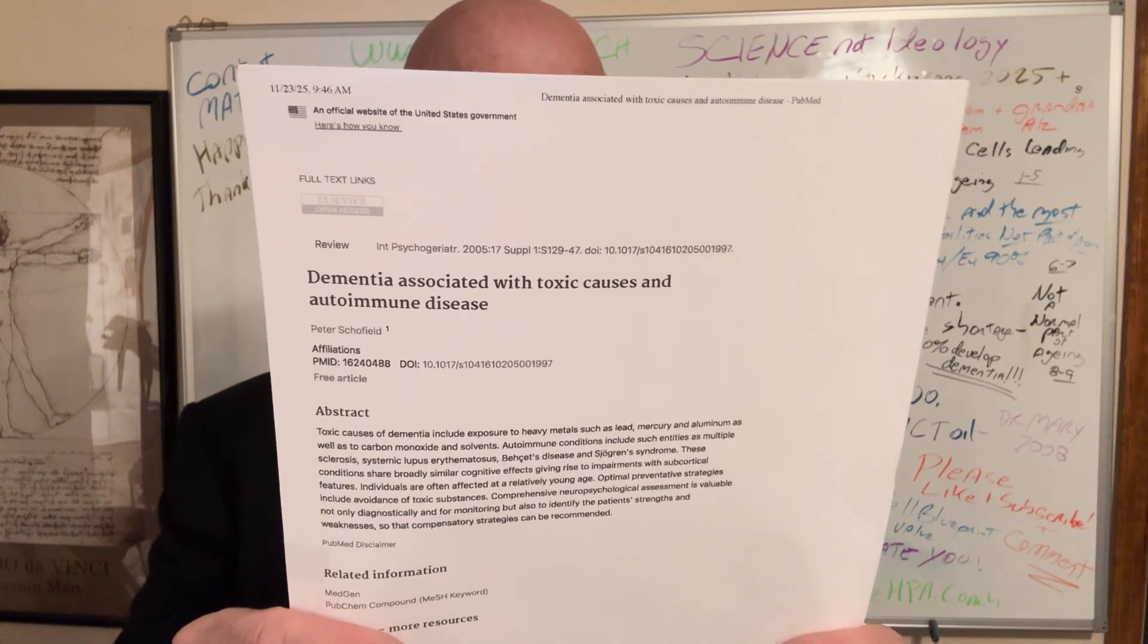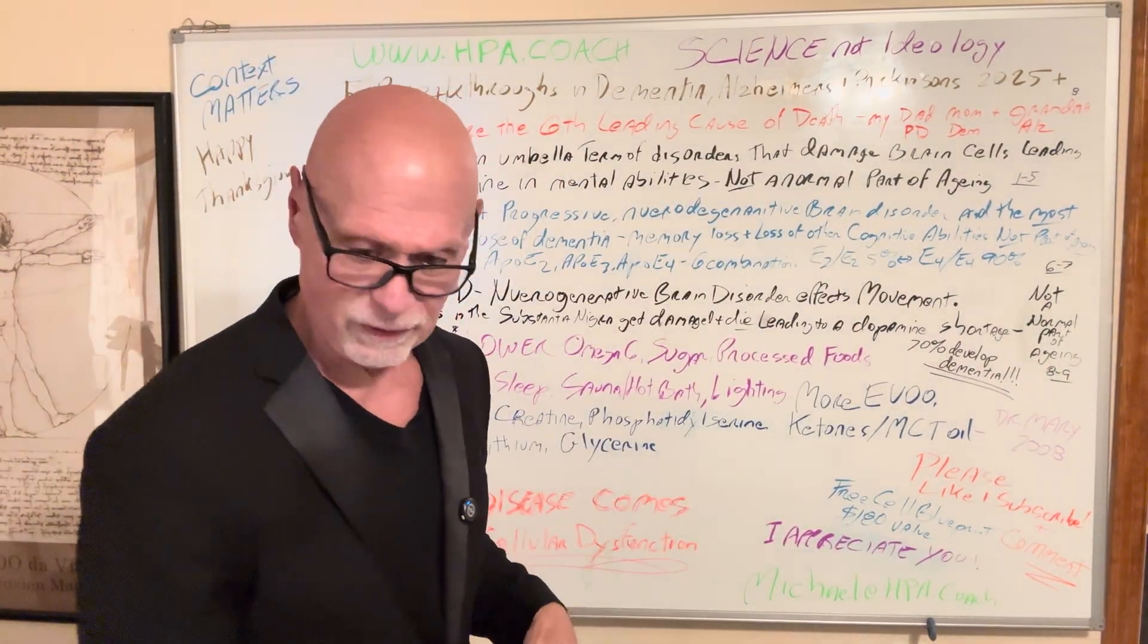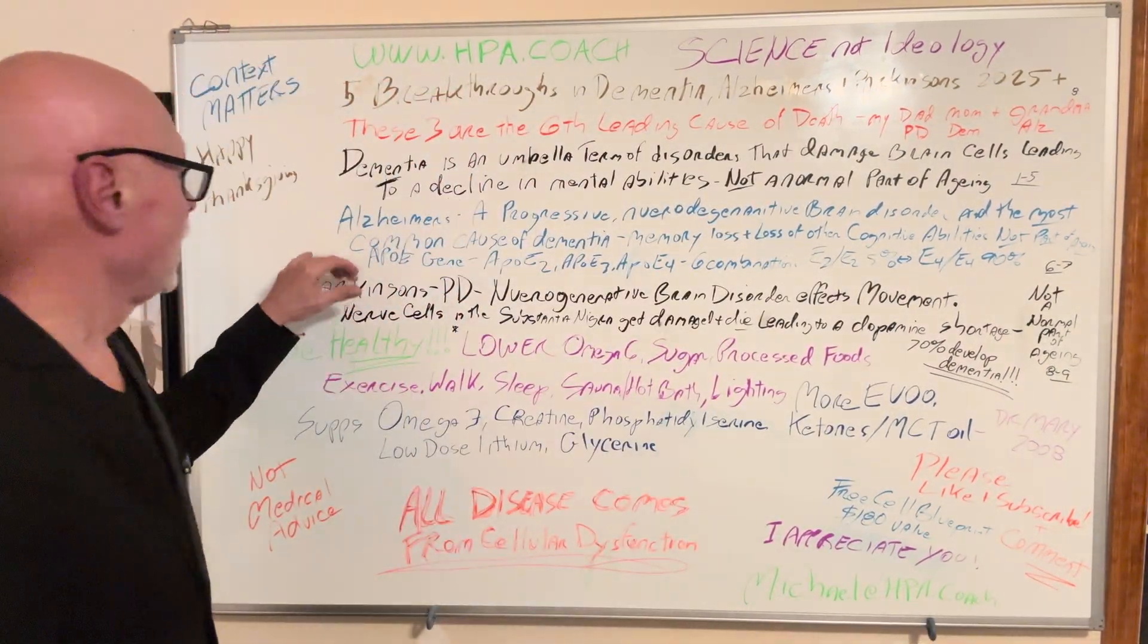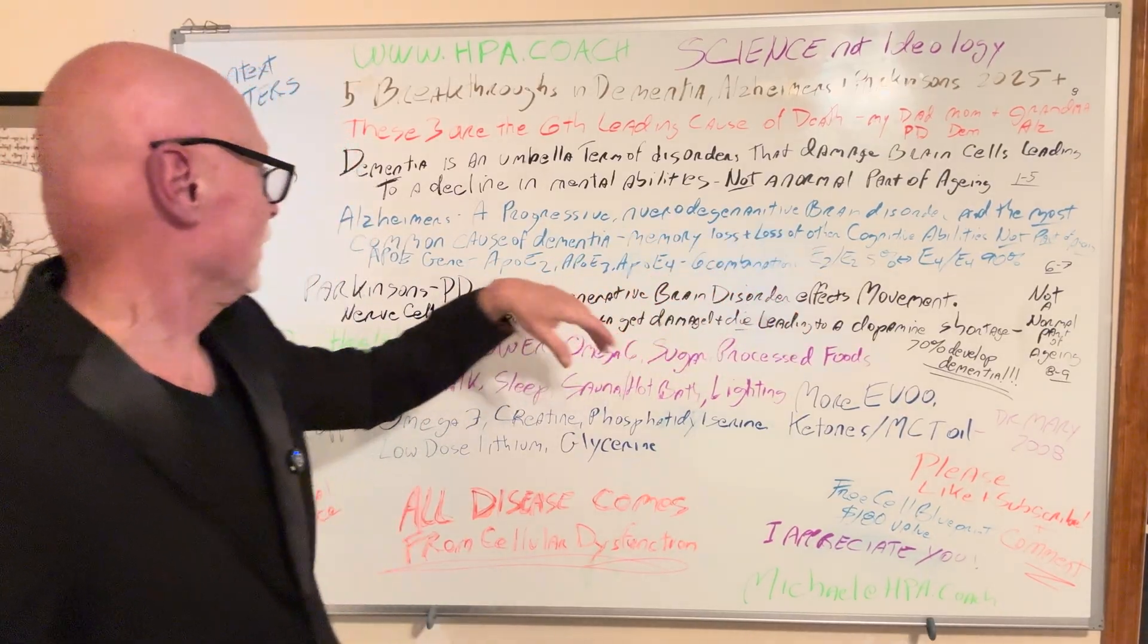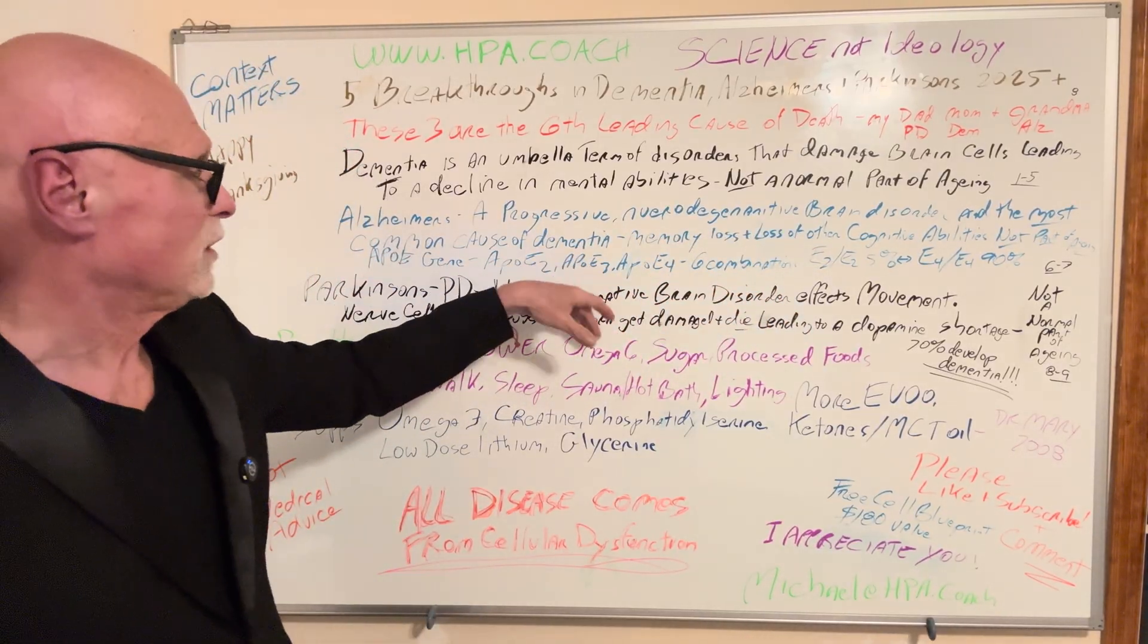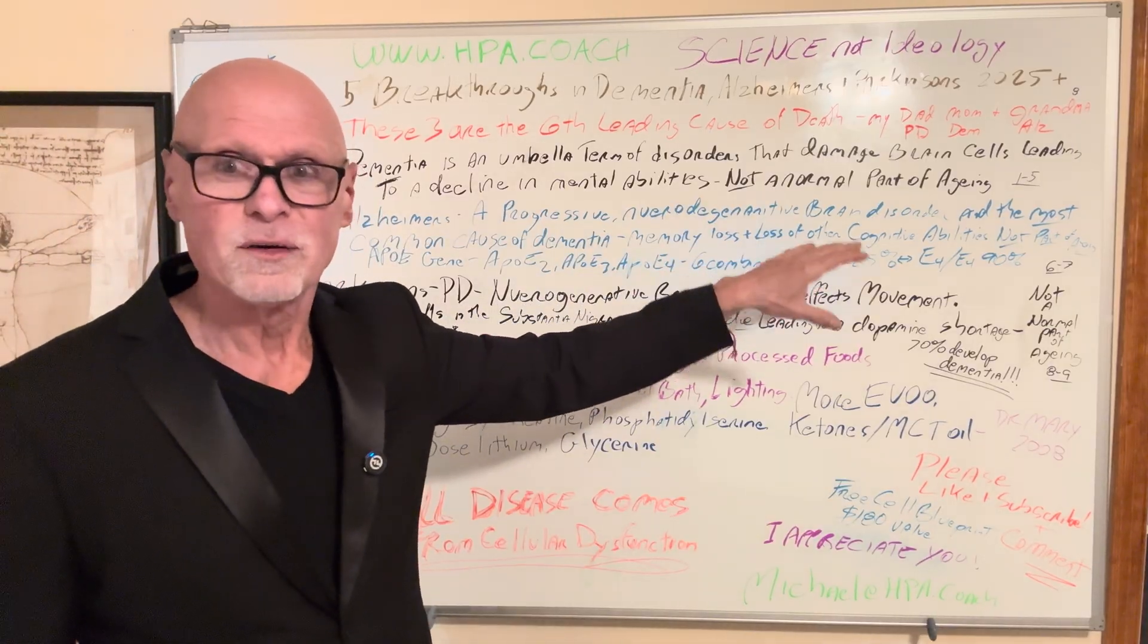This is the last paper for dementia. Toxins are also associated with dementia and autoimmune disease. All right. Alzheimer's, progressive neurodegenerative brain disorder, and the most common cause of dementia, memory loss and loss of other cognitive abilities, not part of normal aging.